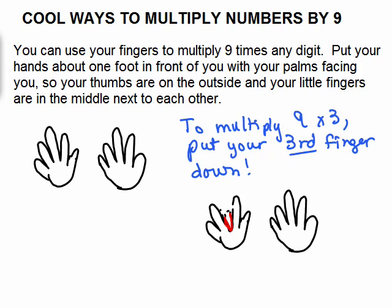Often, people think that multiplying by 9 is difficult, but it's actually one of the easiest numbers to multiply by. In fact, you can use your fingers to multiply 9 times any single digit, like 9 times 2, 9 times 3, etc.